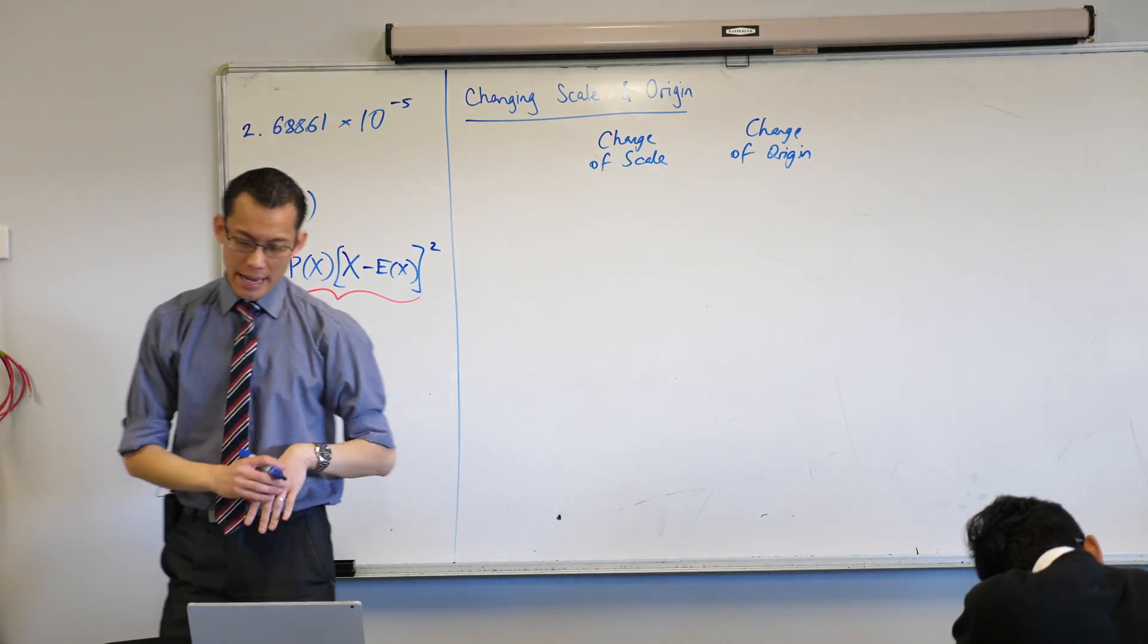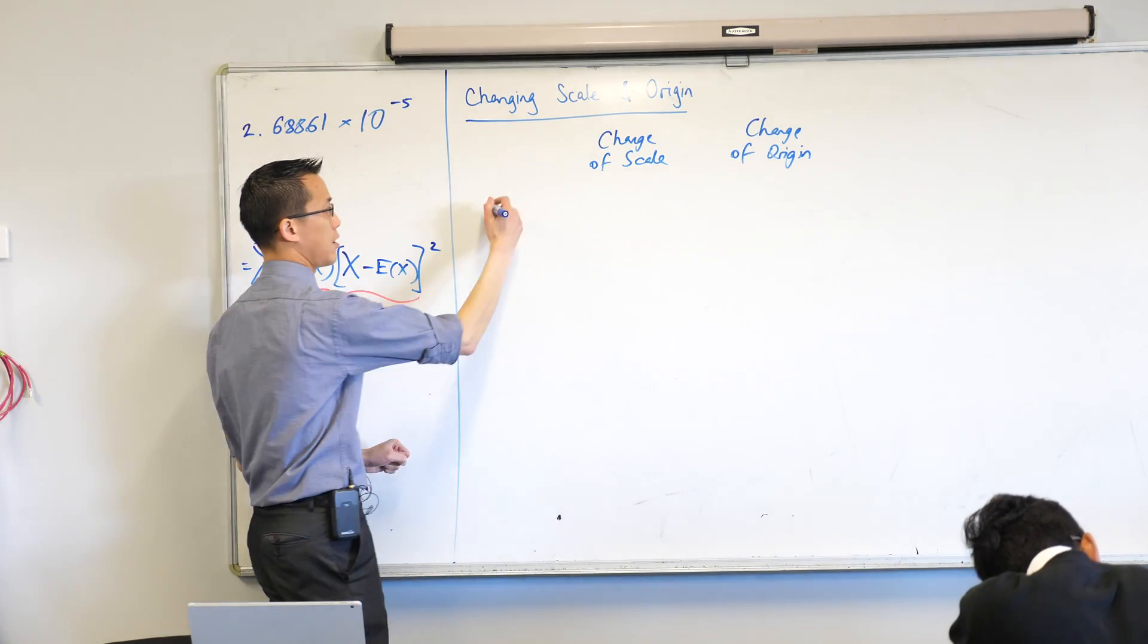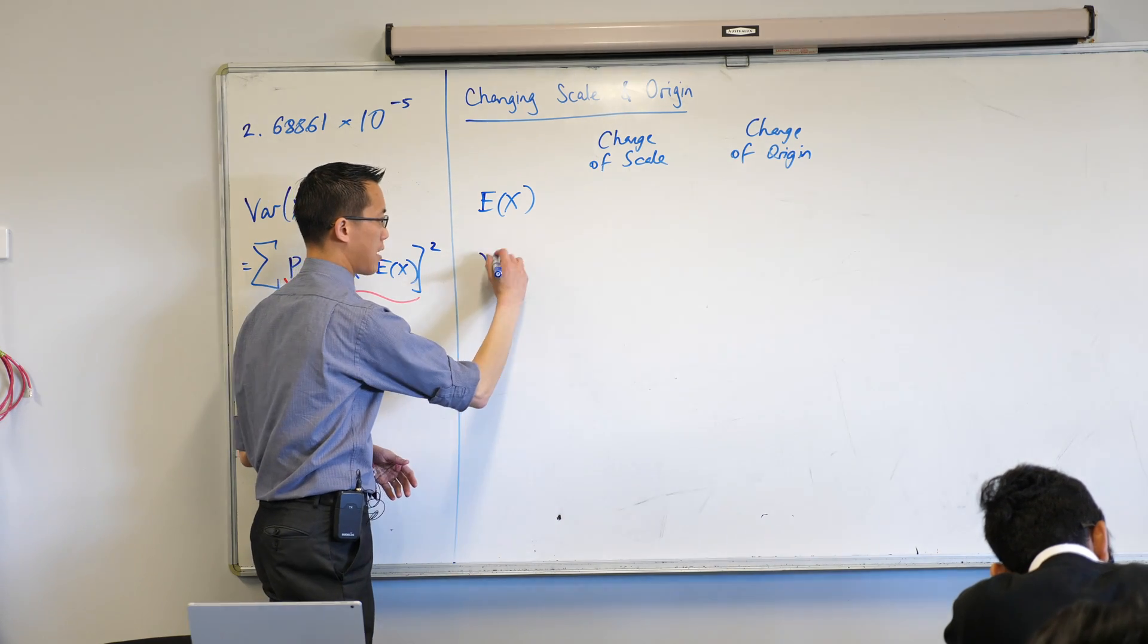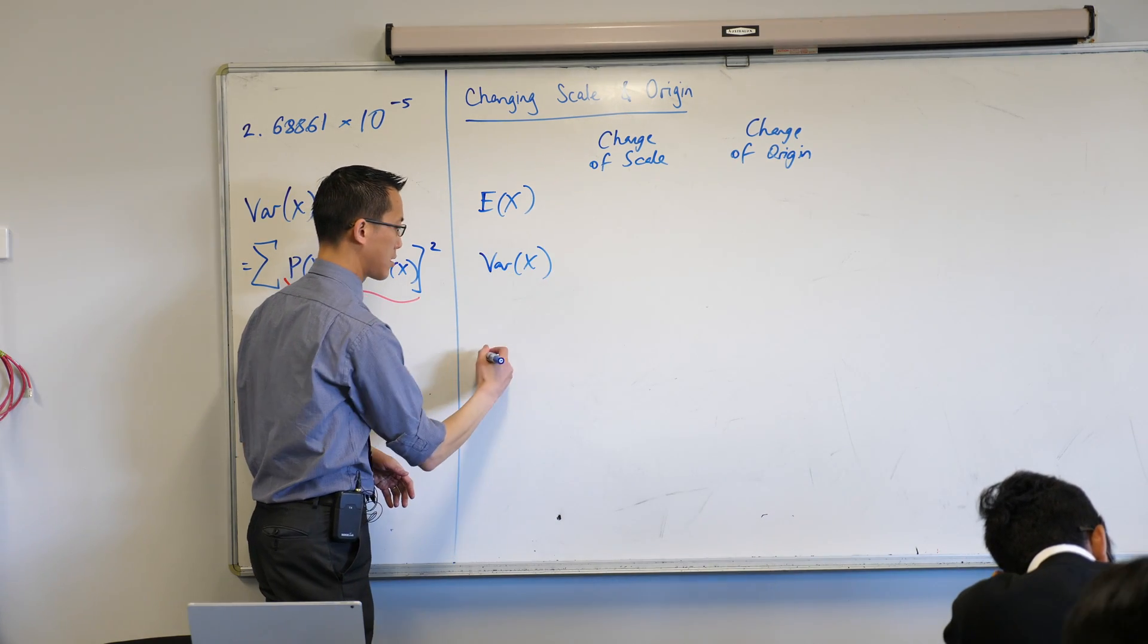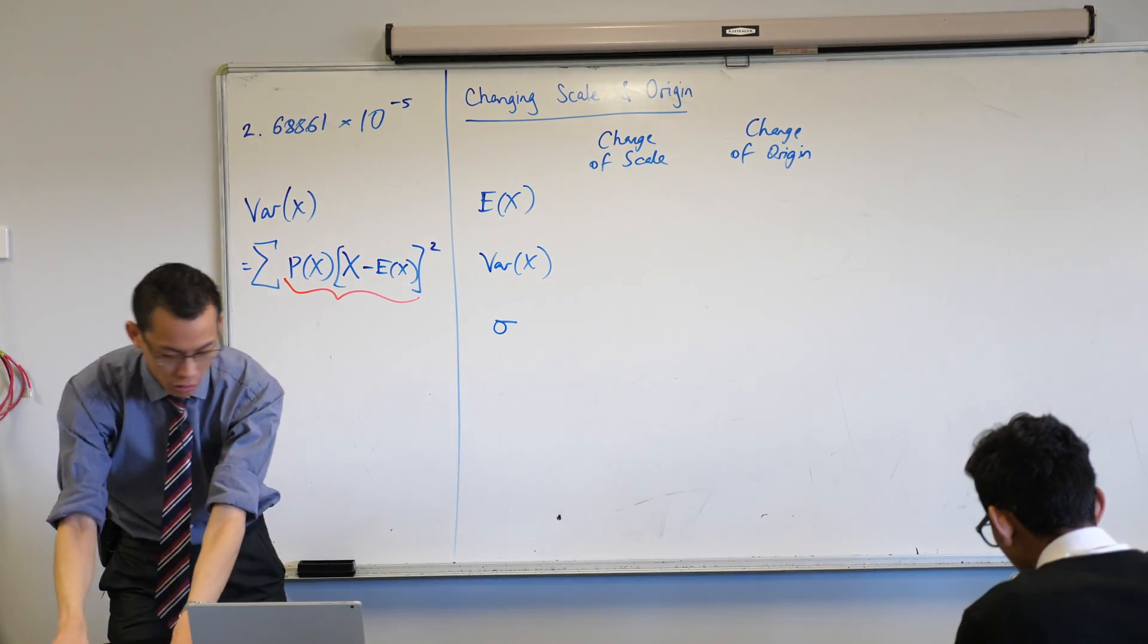And then what we're going to do is think about the effect of this on each of the things that we calculated. So there's going to be expected value. How does that change? There's going to be variance. How does that change? And then there's going to be standard deviation. How does that change? So this is what our table's roughly going to look like.